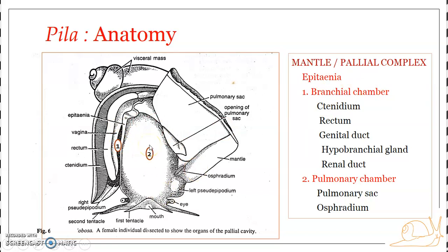There are many important organs and structures associated with the pulmonary chamber and branchial chamber — collectively the mantle cavity. Those organs associated with the mantle cavity together are known as the mantle complex. Since the mantle is otherwise known as the pallium, the mantle complex is also known as the pallial complex.